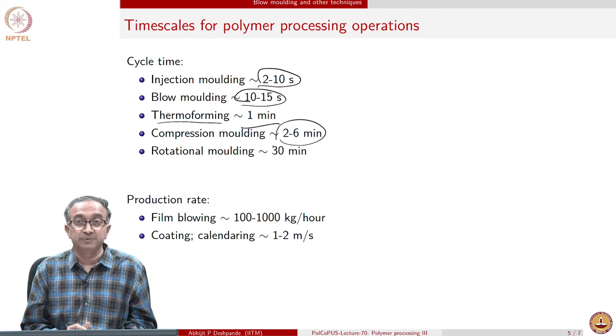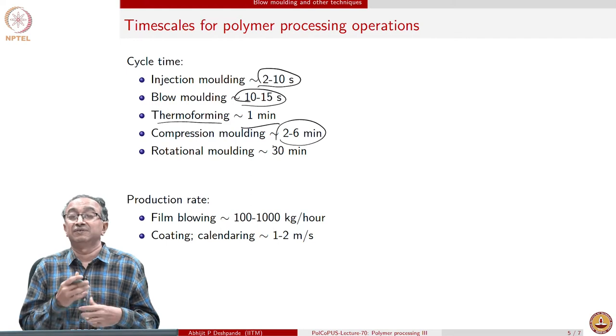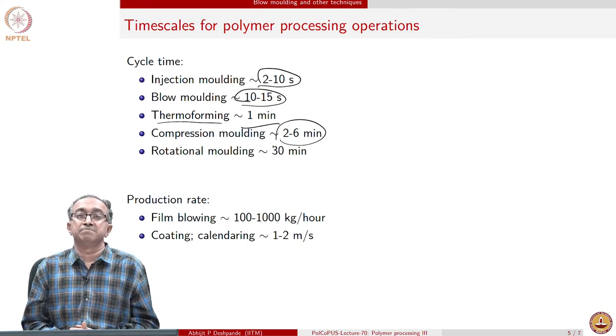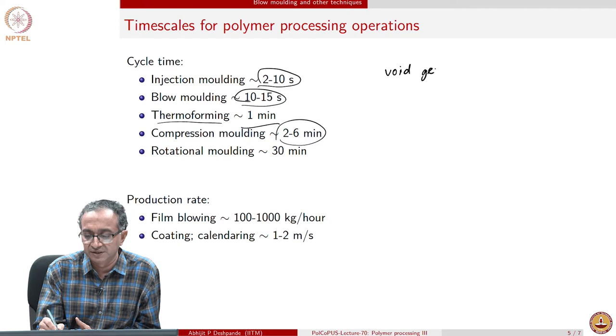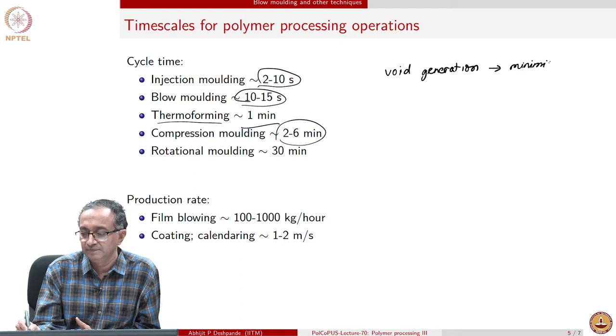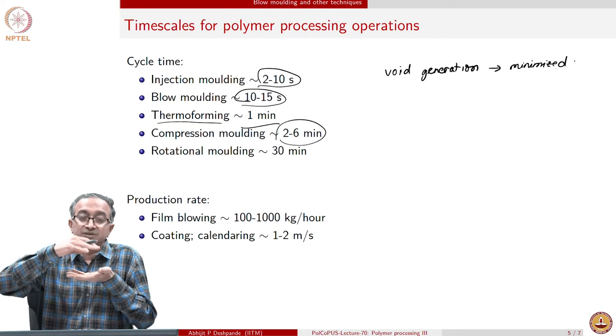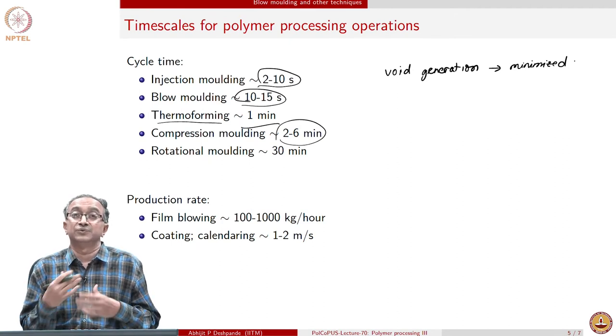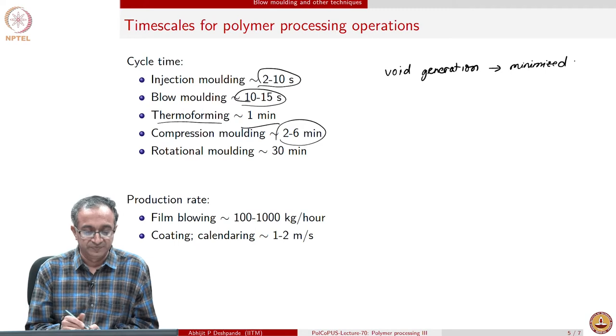Whenever we are doing these operations, it is possible that gases or air can get entrapped which will lead to voids. In all of these cases, we will have to manipulate the pressurization, closing, opening in such a way to minimize entrapment of voids or the void generation. Void generation is a very important defect during polymer processing and this needs to be minimized. In compression molding for example, this can be done sometimes by doing what is called breathing. We can close the compression mold then open it little bit and again close it to allow the gases or voids which are there to escape. That is why it is called a breathing operation. We hope that the polymer will exhale the voids out.